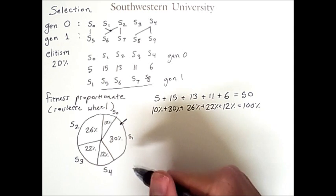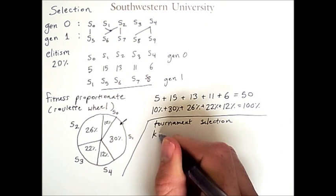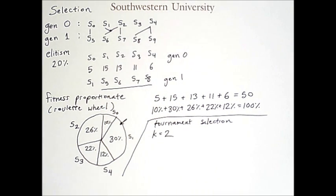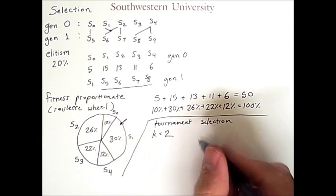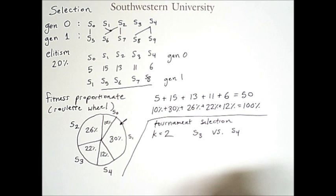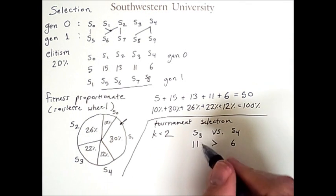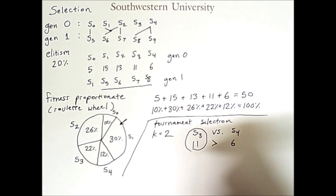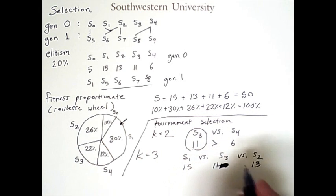A somewhat better approach more commonly used today is tournament selection. This approach uses a parameter k for the tournament size, and it's very common to use a size of 2. We randomly select k individuals from the population — for example, S3 and S4 — then compare their fitness values. S3 has the highest fitness value, so it would be selected to be a parent or to create a mutated clone. If we increase the tournament size to 3, we randomly select 3 individuals, and the one with the highest fitness is selected.